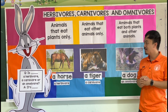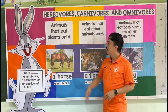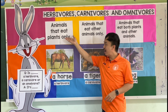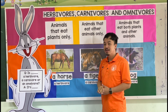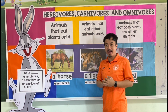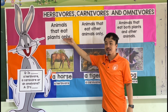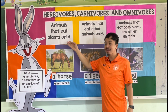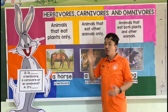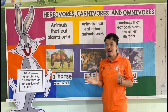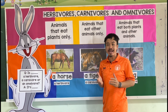Let's start with herbivores. Herbivores are animals that eat plants only. So students, the key word is plants. They only eat plants — they don't eat other food, like they don't eat meat. They only eat plants.